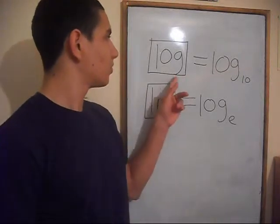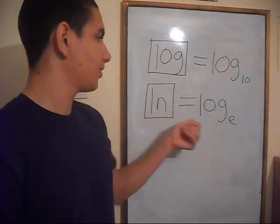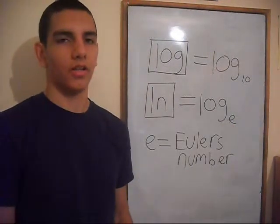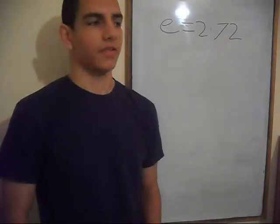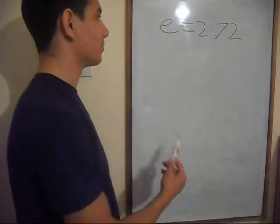The log button does a log to a base of 10. And the ln button does a log to a base of E. E is a letter to represent Euler's number. The value of E is 2.72. But that's not an accurate representation.